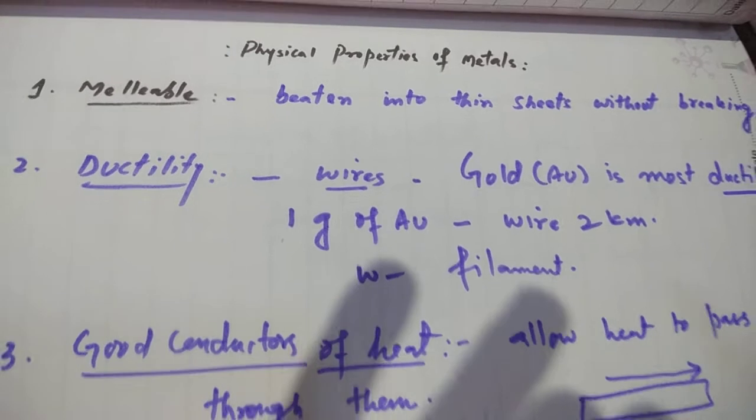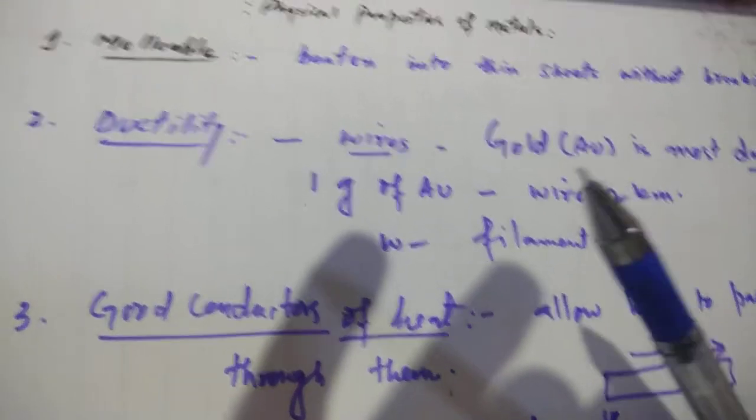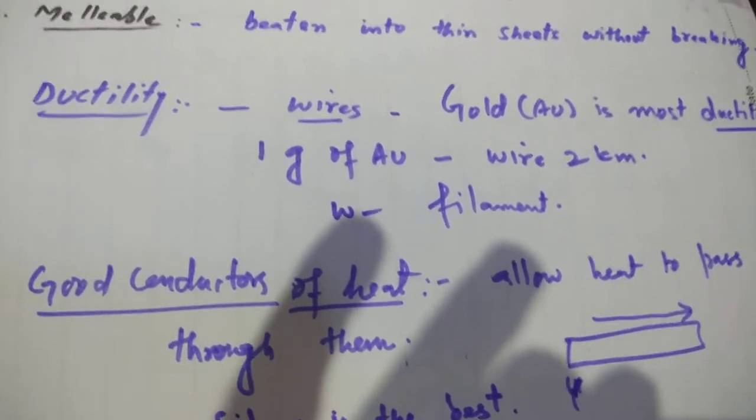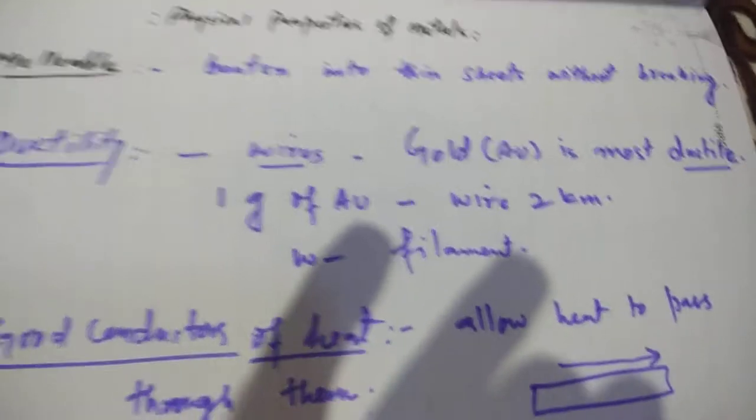The second property is ductility. Ductility is the property of metal by the virtue of which it can be drawn into thin wires.